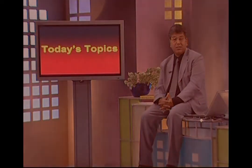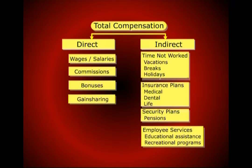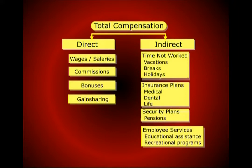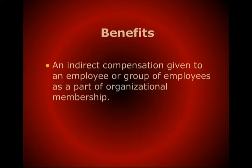Now let's start today's topic. Going back a little bit and trying to understand total compensation — there are direct compensation and indirect compensation. We will look at the direct part and today's topic will cover the indirect part. Direct compensation includes salaries or wages, commissions, and bonuses — direct financial benefits. Indirect compensation, which we call the benefits, includes vacations, insurance — medical insurance, life insurance — and so many other things. Security, pension, and services that your organization provides — that is coming under indirect compensation. We call them the benefits.